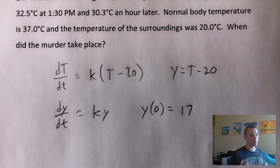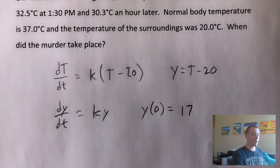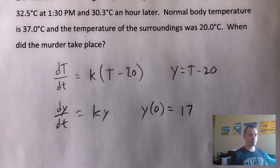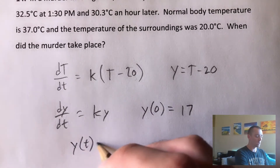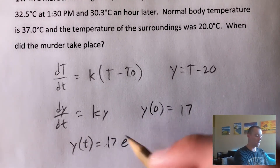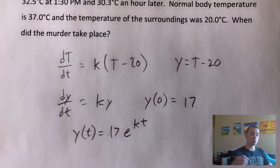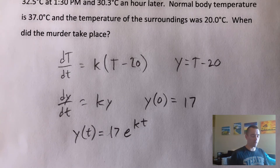We can now use another formula from my integral calculus cheat sheet — the general form for exponential growth and decay. That formula tells us that the solution to this differential equation satisfying the initial condition is Y(t) equals 17 times e to the KT. We know this is the solution, though we still don't know what K is.